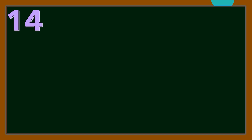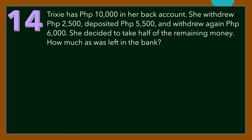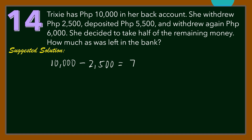Number 14. She has 10,000 pesos in her bank account. She withdrew 2,500 pesos, deposited 5,500 pesos, and withdrew again 6,000 pesos. She decided to take half of the remaining money. How much was left in the bank? Let us follow the scenarios from the problem. Trixie begins with 10,000 pesos, then she withdrew 2,500 pesos. The remaining will be 7,500.